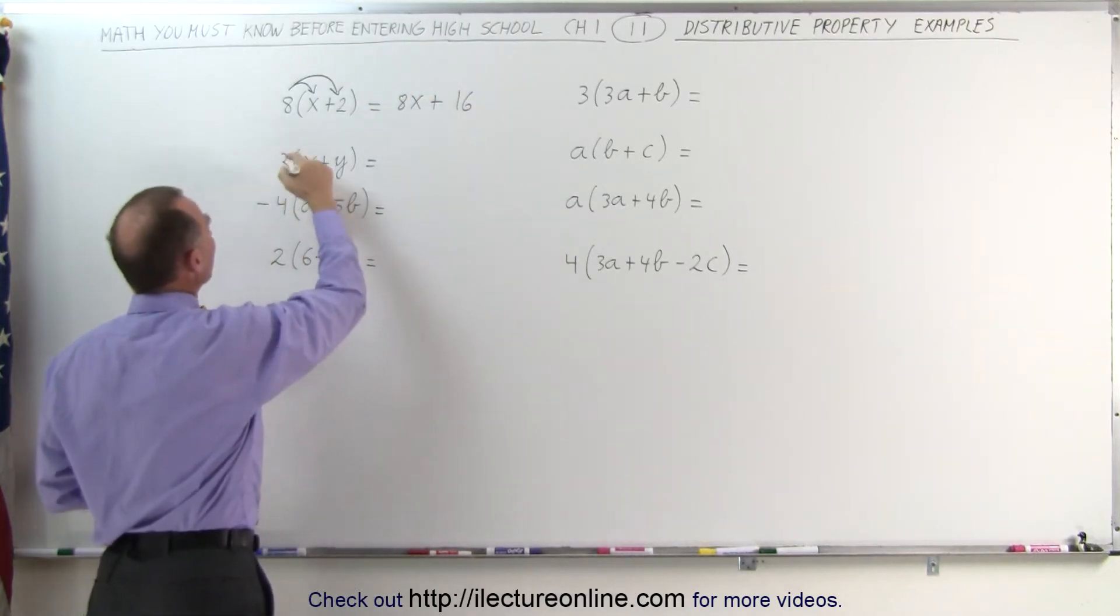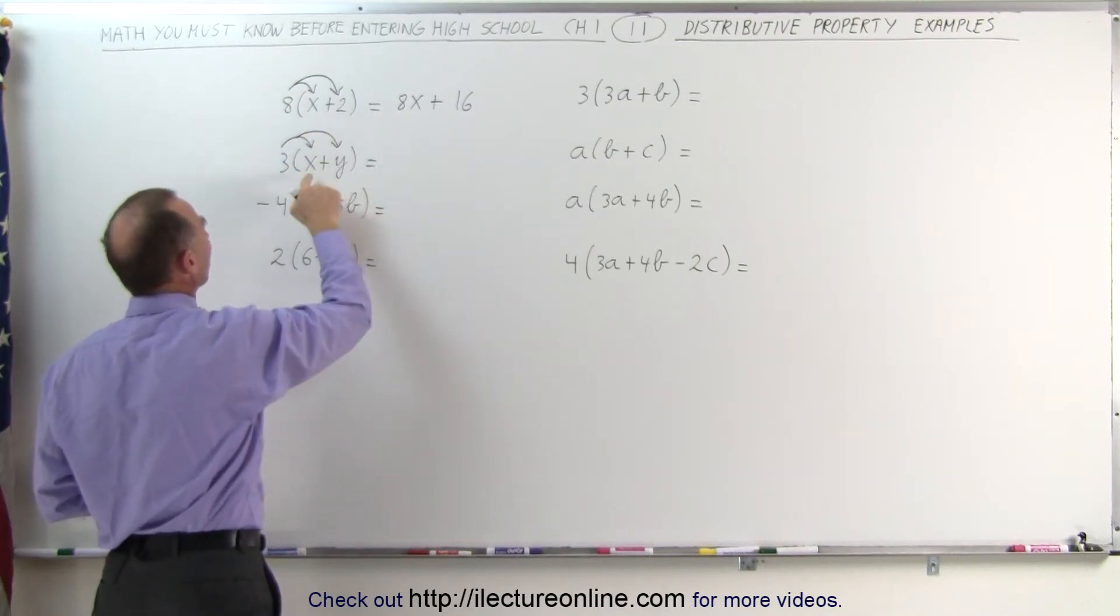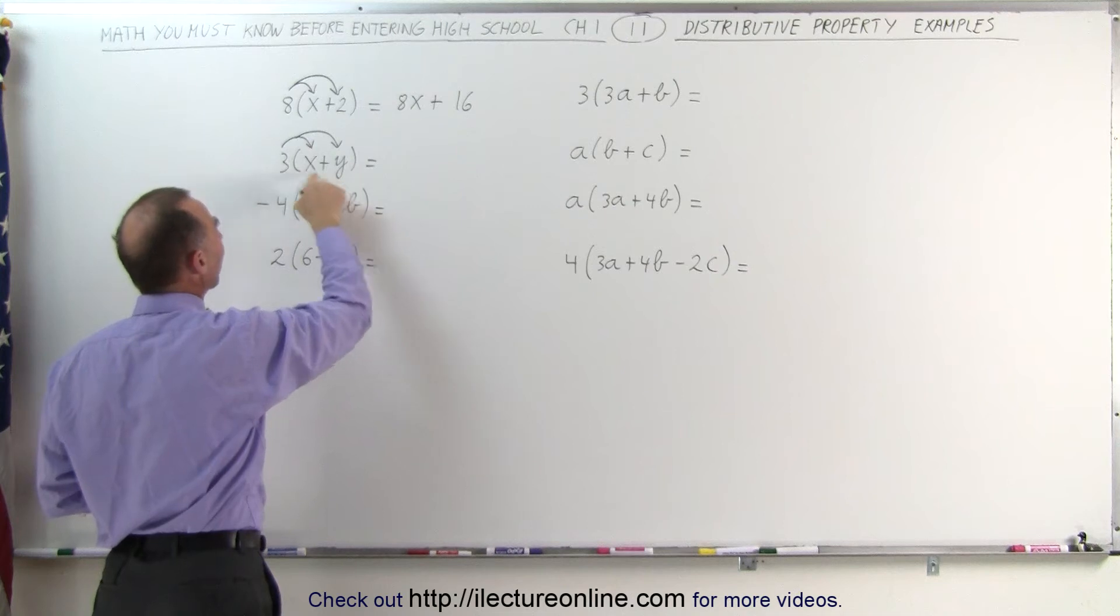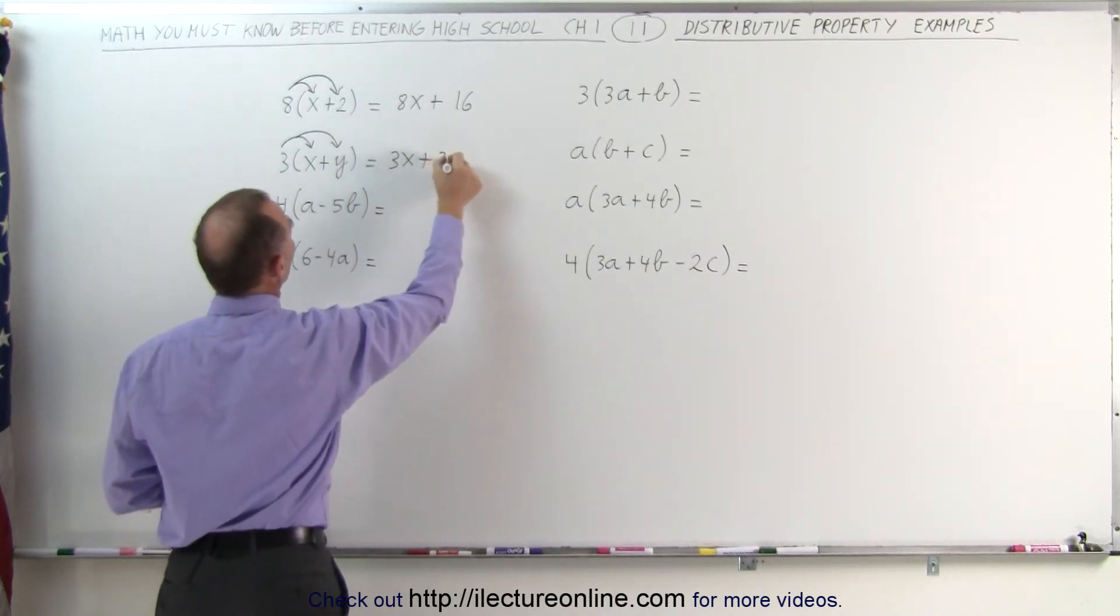Here we do the same thing. We're distributing the three across the x and the y. We're going to multiply the x times three and the y times three. This then becomes 3x plus 3y.